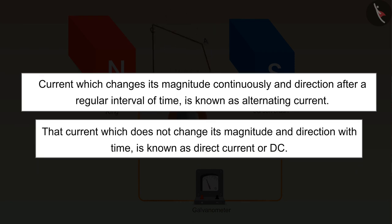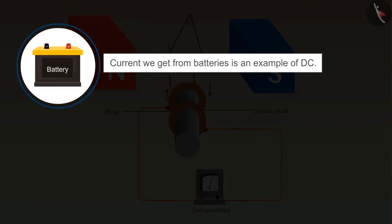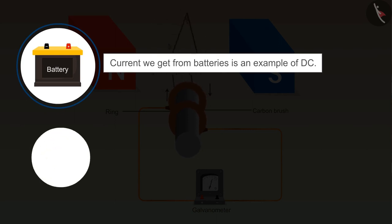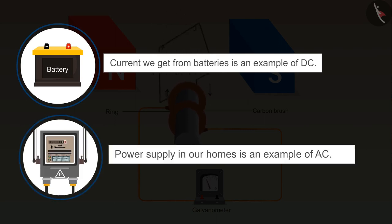And the current which does not change its magnitude and direction with time is known as direct current or DC. The current we get from batteries is an example of DC, whereas the power supply in our homes is an example of AC.